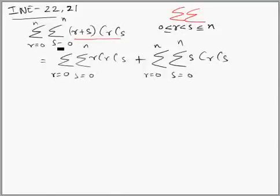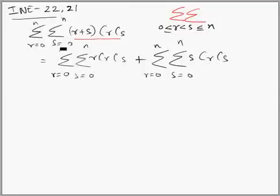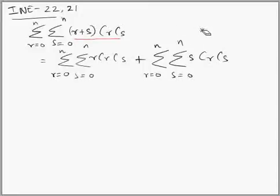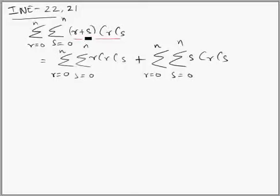In question 21, r and s are independent of each other — you can move one sigma out and bring the other in. r is not dependent upon s and s is not bounded by r. So we can call this scenario two sigmas in disconnected mode — two disconnected sigmas.